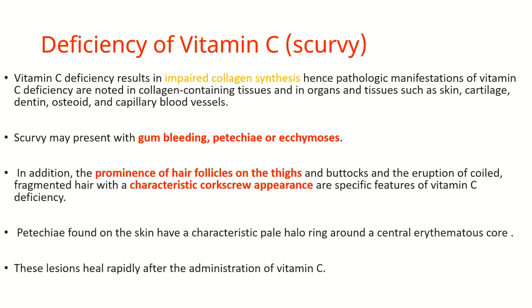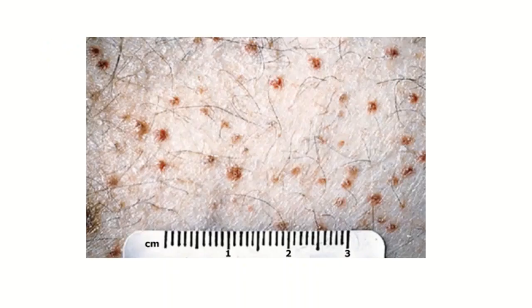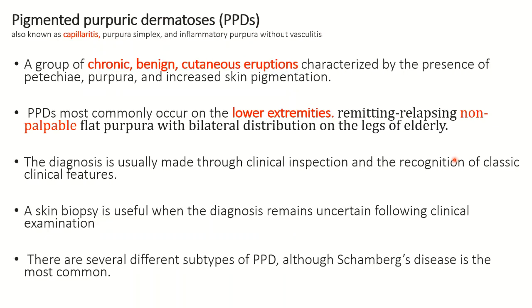The second common cause of petechiae is scurvy, or deficiency of vitamin C. Vitamin C is very important in collagen synthesis, and impaired collagen synthesis causes leaky blood vessels, resulting in purpura. This is associated with gum bleeding and other petechiae or even ecchymosis. An important sign is the prominence of hair follicles on the thighs, where the hairs are fragmented and have a characteristic corkscrew appearance, making the diagnosis clinically easy. Vitamin C supplementation leads to a good response.